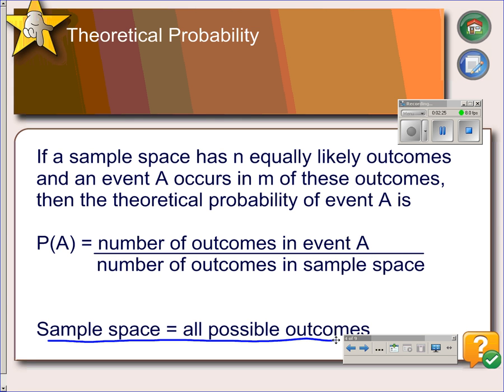If a sample space has n equally likely outcomes and an event A occurs in m of these outcomes, then the theoretical probability of event A is given by this formula: Probability of event A equals number of outcomes in event A divided by the total number of outcomes in the sample space.